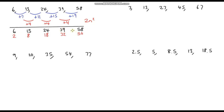So this is our original sequence and this is the sequence 2n squared. To find out what's left we subtract our 2n squared sequence from our original sequence. 6 minus 2 is 4, 13 minus 8 is 5, 24 minus 18 is 6, 39 minus 32 is 7, and 58 minus 50 is 8.